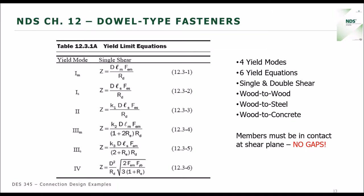These equations are shown for single shear. There are also double shear connection equations. You can use these equations for wood-to-wood connections, wood to steel, or wood to concrete — as long as you have the bearing properties of the material. One limitation of these equations is that the members need to be in contact at the shear plane — they have to be touching each other. If there are gaps between the members, these equations would not be valid. We're going to talk about one option for that in a little bit.